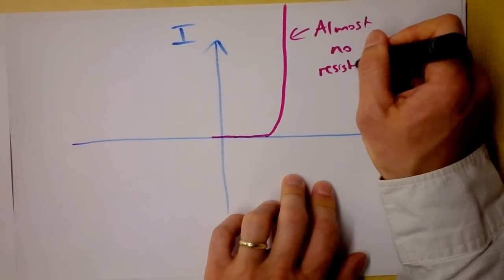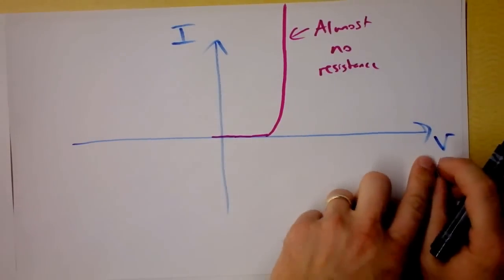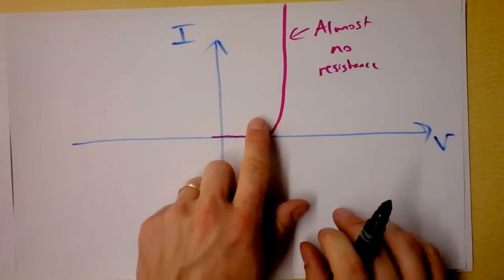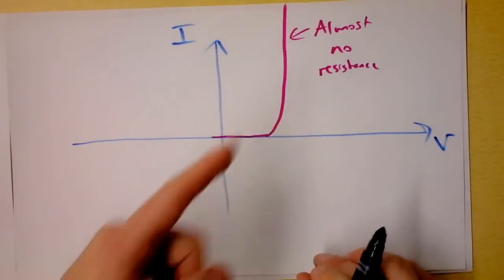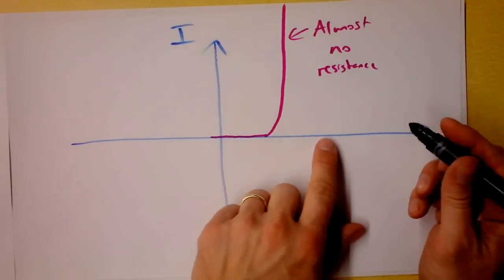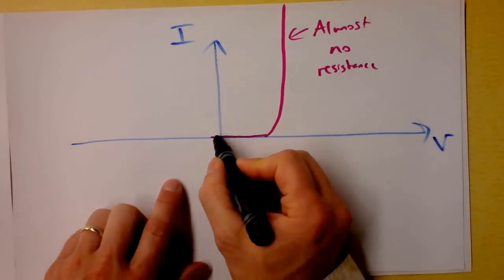In fact, if you continue increasing the voltage without bridling in your current a little bit, you'll destroy the diode this direction. That's dangerous. I want you to point out if you keep going this direction,